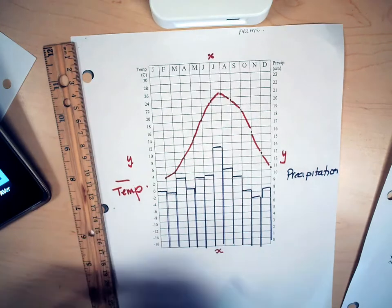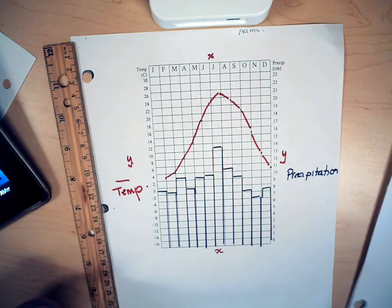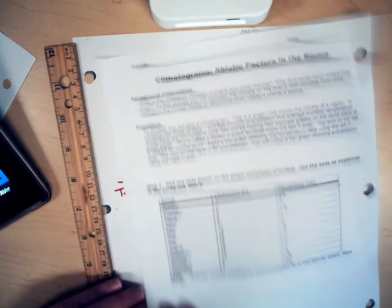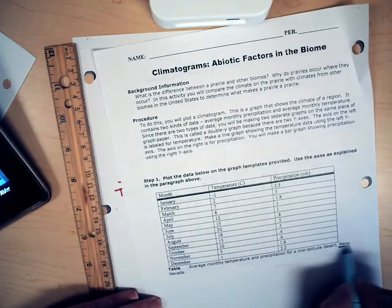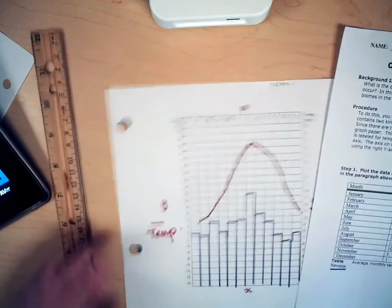So you are going to do a climatogram for the data for Greensboro North Carolina and then you are going to turn over and do it for Reno Nevada on the other side of the paper.